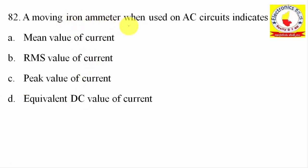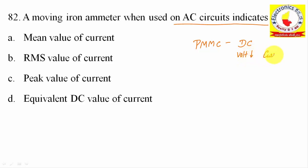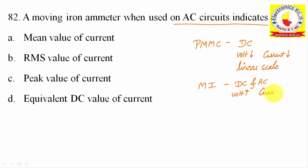82nd question: A moving iron ammeter, when used on AC circuits, indicates — what? For reference, PMMC is used for DC measurement with a linear scale. Moving iron instruments can measure both DC and AC, with a higher voltage and current range, and they use a non-linear scale.